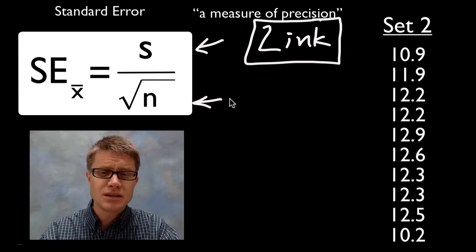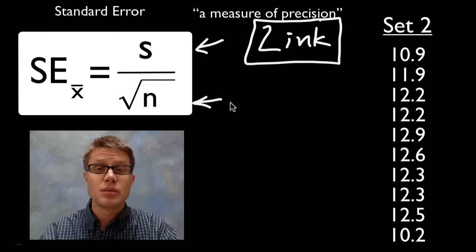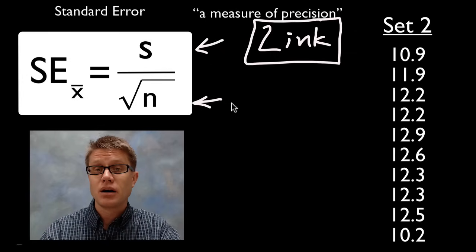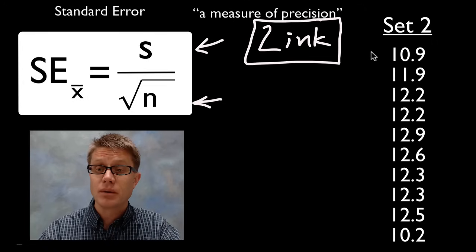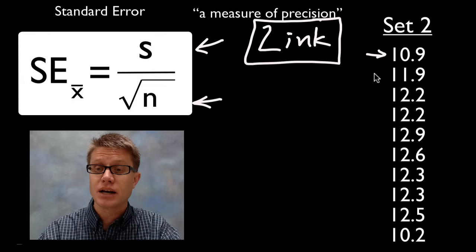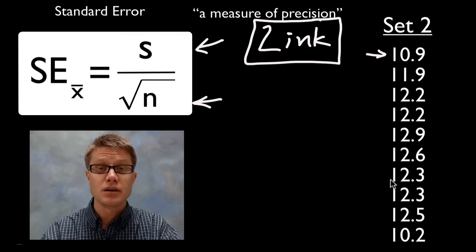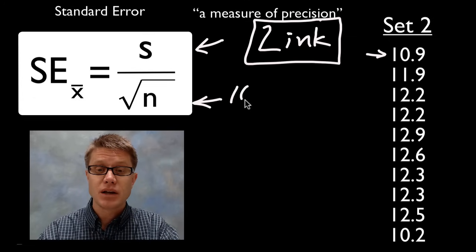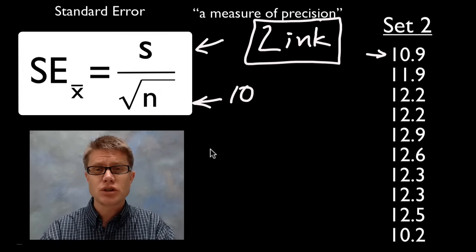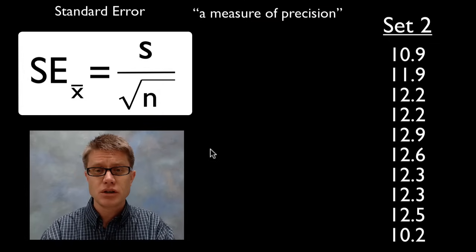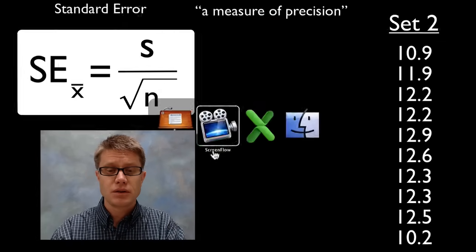What is sample size? Sample size is going to be the number of trials that you do, or the number of data points that you collect. If we look at data set 2, there are 10 numbers, so that means I'm going to have a sample size of 10. Keeping those in mind, let me switch over to the spreadsheet and show you how I would figure this out.